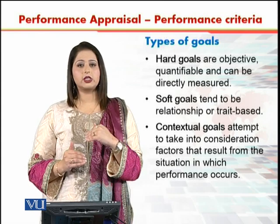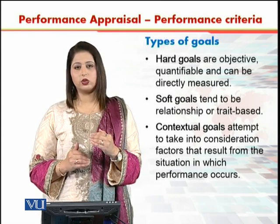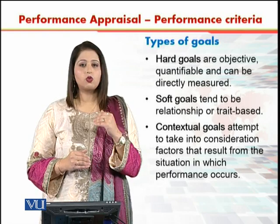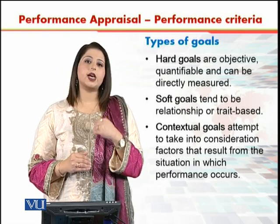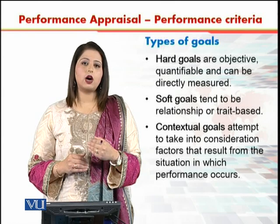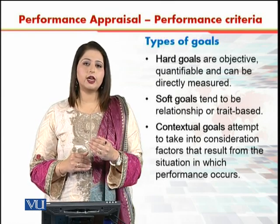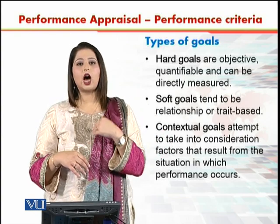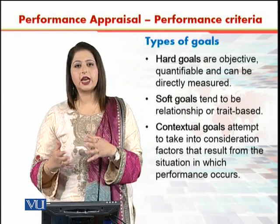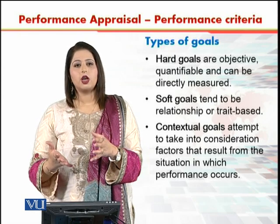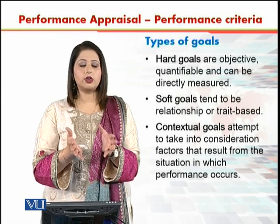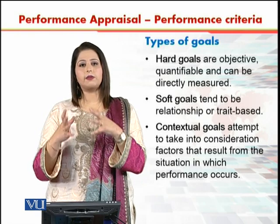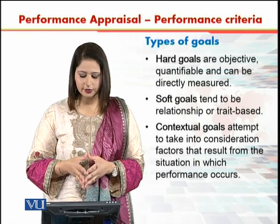The first type are hard goals. Hard goals are objective, quantifiable, and can be directly measured — such as how many hours worked, how many products produced, how many contracts signed, how much sales made, or how much production a manufacturing unit has achieved. The number is something which is objective and quantifiable.